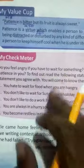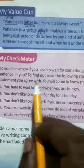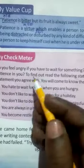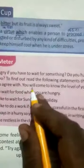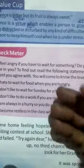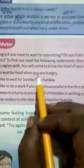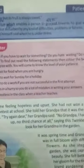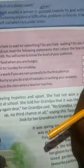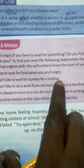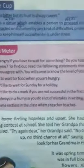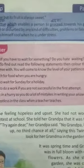In this check meter, I will explain it in Hindi. First statement: you have to wait for food when you are hungry — if you feel you can't wait when very hungry, mark that point. Second statement: you do not like to wait for Sunday for a holiday. We study for six days and then wait for when we will get a holiday to relax.